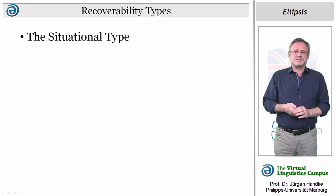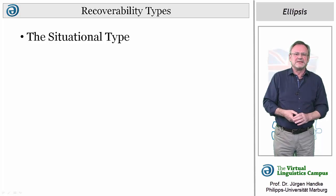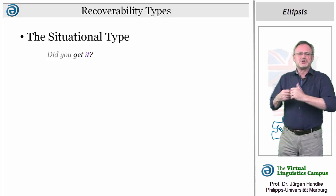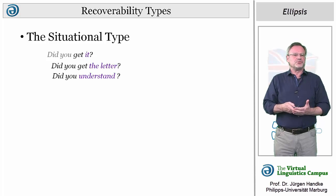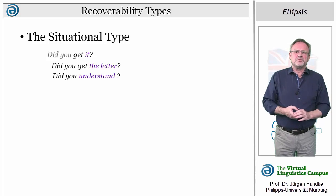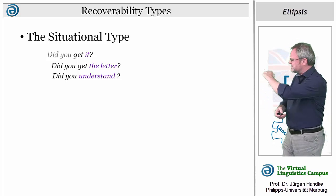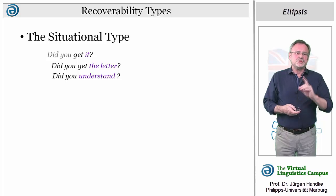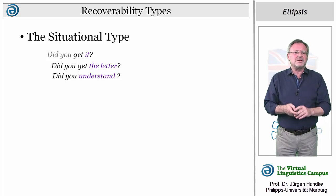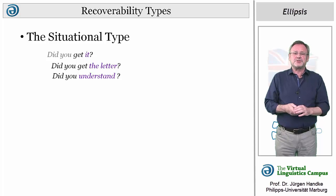In situational ellipsis, the interpretation depends on knowledge about some extra-linguistic context. For example, 'Get it' — a short form for 'Did you get it?' — may be substitutional for sentences like 'Did you get the letter?' or it can be interpreted as 'Did you understand?' In this example, situational ellipsis is final. However, usually it tends to be initial, especially taking the form of omitting the subject, the operator, or both. It occurs in declarative as well as in interrogative sentences.